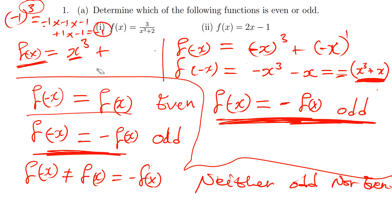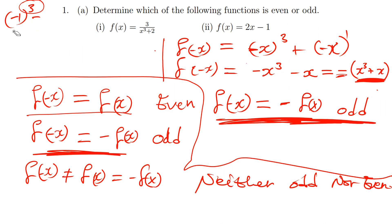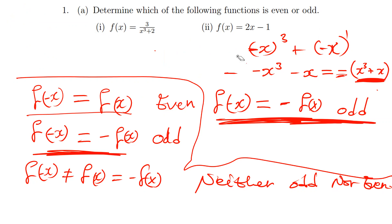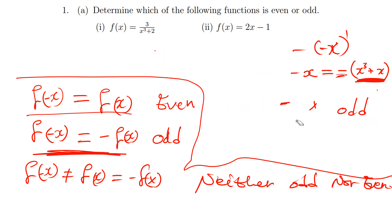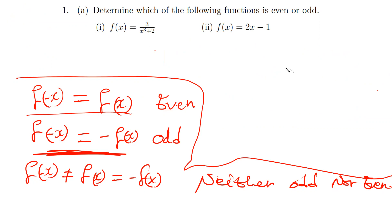The simplest way to master this: if a function consists only of even powers, it is an even function. If it consists only of odd powers, it is an odd function. And if it is a mixture of even and odd powers, then the function is neither even nor odd.